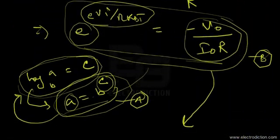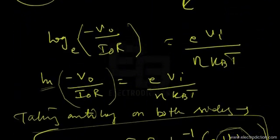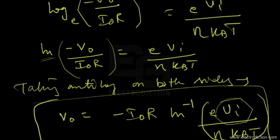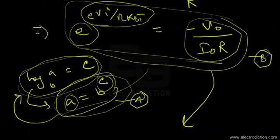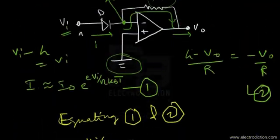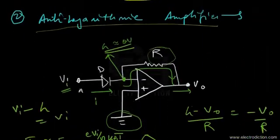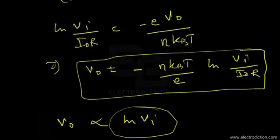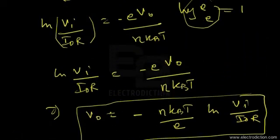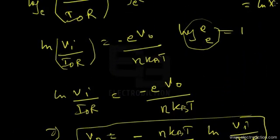That wraps up today's discussion, having described the circuits of both the logarithmic and anti-logarithmic amplifiers. See you in the next tutorial on op-amps. Thank you and goodbye.